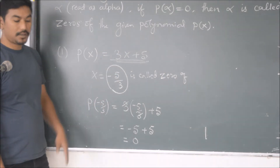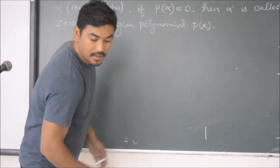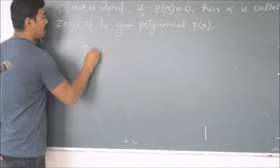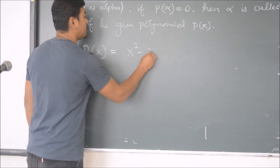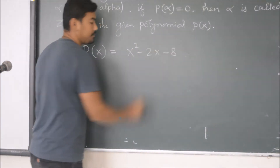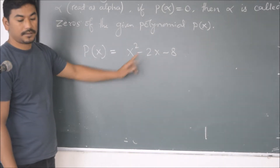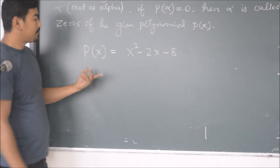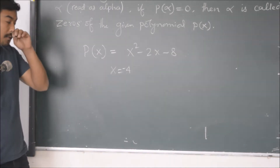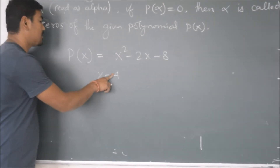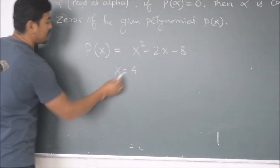Let me give one more example. Suppose we have a second polynomial p(x) equals x squared minus 2x minus 8. We are looking for the zeros of this polynomial. Let me check with x equals 4, so let us replace x by 4.